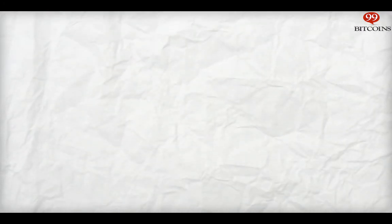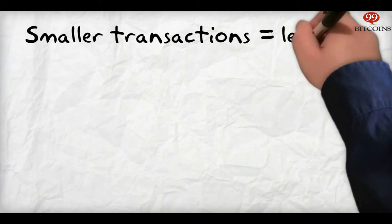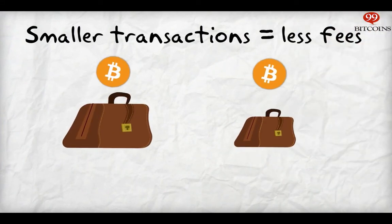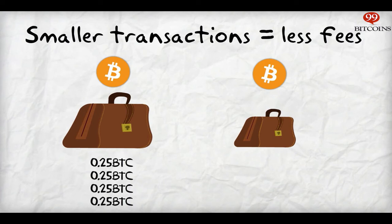Rule number three: smaller transactions require less fees. Each transaction is made out of inputs. The fewer inputs used to compile a transaction, the less fees will be required. So if you were to send 1 Bitcoin using 4 inputs of 0.25 Bitcoins, it is more likely to require a fee than if you were to send just 1 input of 1 Bitcoin.